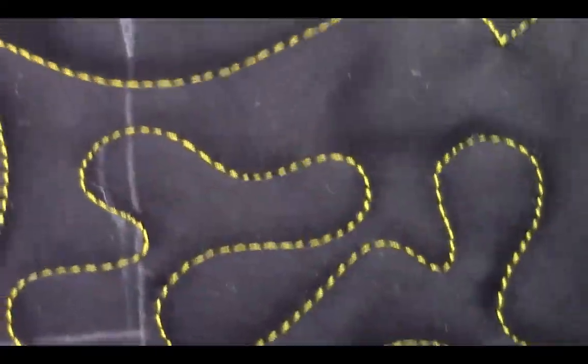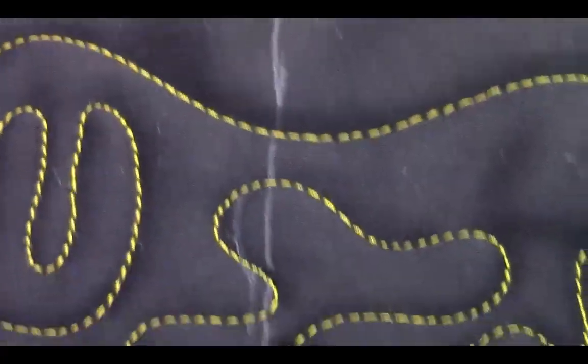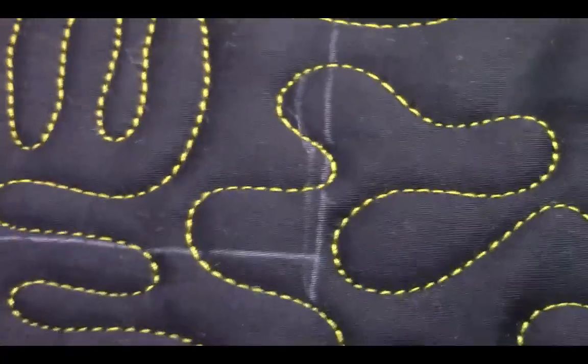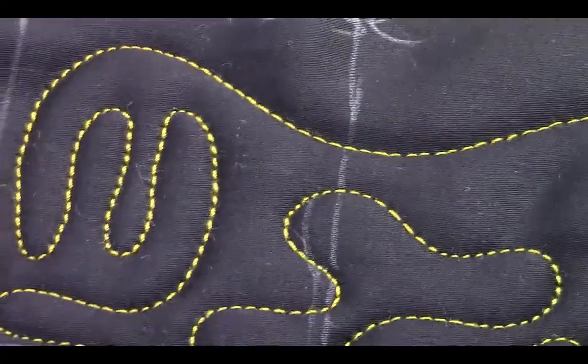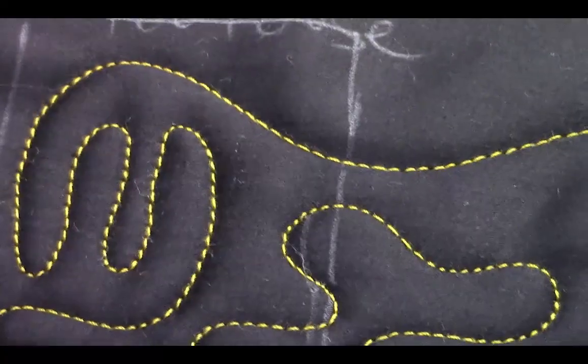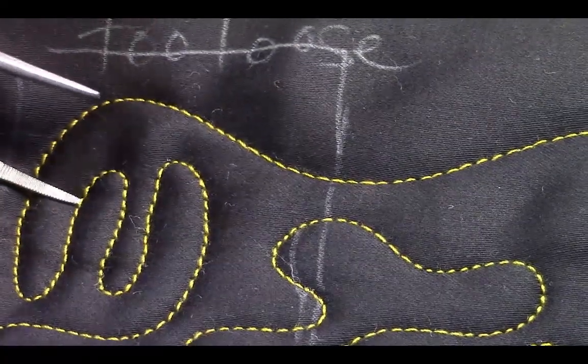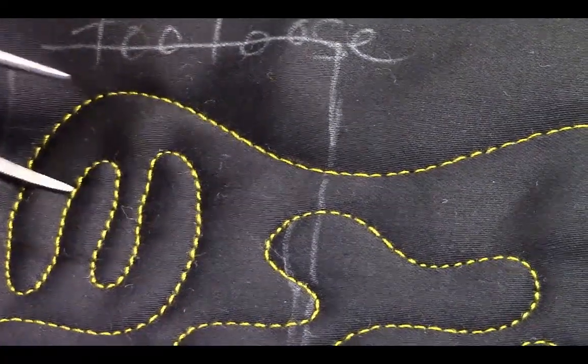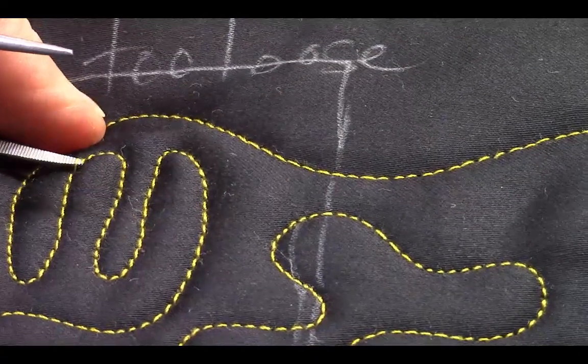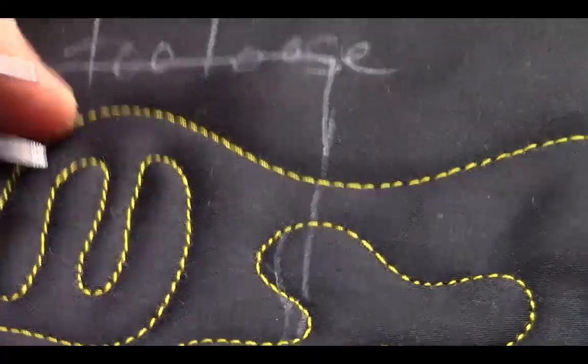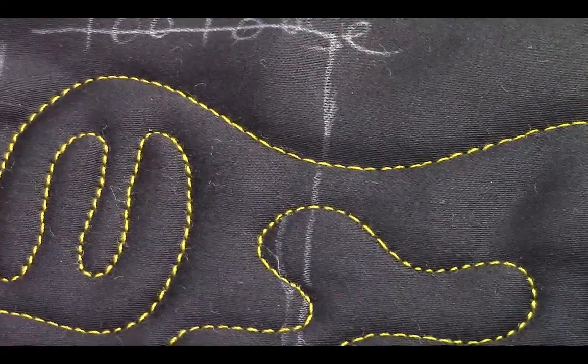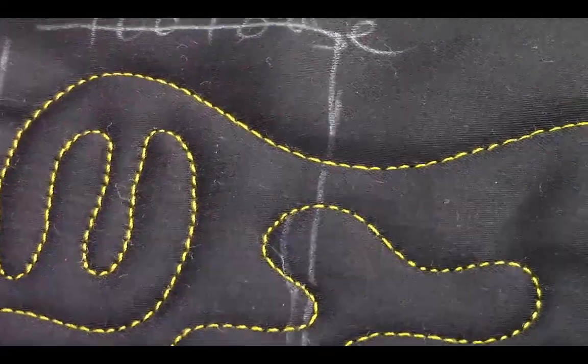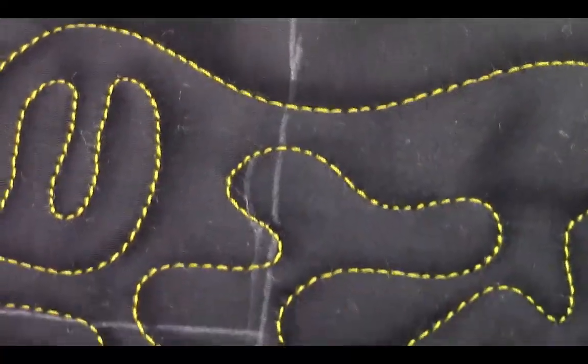If you have your tension too loose on top, unfortunately, it looks pretty good. In this area right here, it is too loose on top. Now, as you get used to looking at your stitch, I can kind of see that it's not getting pulled down into the fabric very well. It looks okay, though, to the inexperienced eye. You can look at that and see a good stitch.